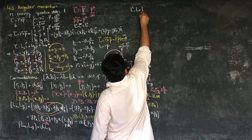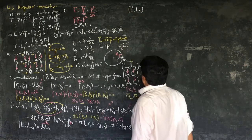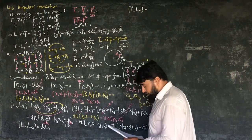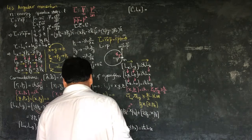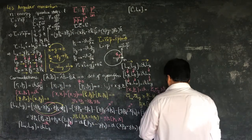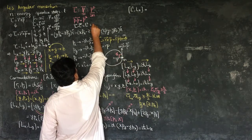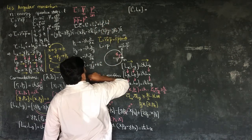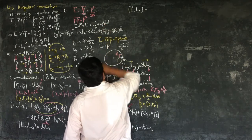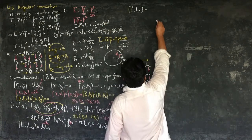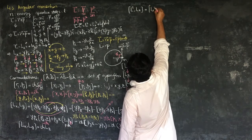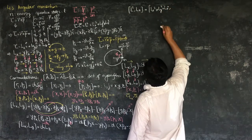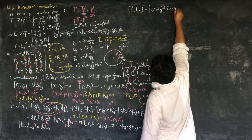What is the commutator of L squared and Lx? The square of magnitude — the square of angular momentum — with one of its components. L squared can be written as Lx squared plus Ly squared plus Lz squared, so we need to compute the commutator of Lx squared plus Ly squared plus Lz squared with Lx.